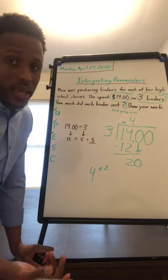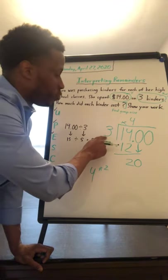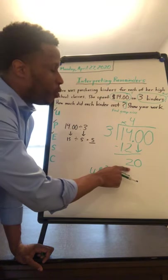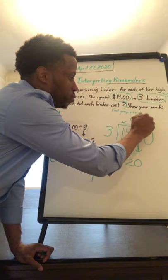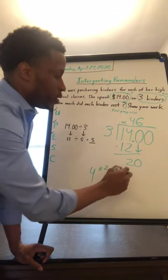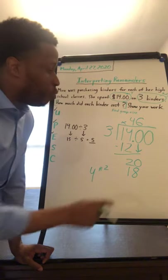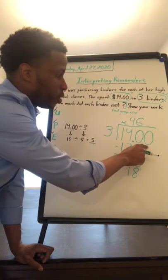Now, I'm going to next ask myself, how many times does three fit into 20? And that would be six times because six times three is 18. I still have one more digit, this last zero to bring down.